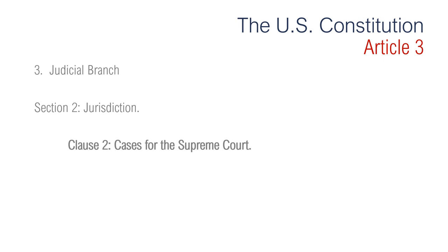Clause 3 is regarding the conduct of trials. It says the trial of all crimes except in cases of impeachment shall be by jury, and such trials shall be held in the state where the said crimes shall have been committed. But when not committed within any state, the trial shall be at such place as the Congress may by law have directed. Any person accused of a federal crime is granted the right to a trial by jury in a federal court in the state in which the crime was committed. Trials of impeachment are an exception.